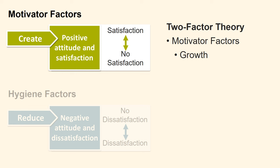Now we will review motivator factors. Growth opportunities — there must be growth opportunities in an organisation to motivate employees to perform well, and the employee must have the opportunity to develop both professionally and personally. Advancement opportunities — many employees want to make a career at work, so there must be advancement opportunities in the organisation. As a manager, you should be aware of the difference between growth and advancement factors, as not all employees want to advance to a higher level.